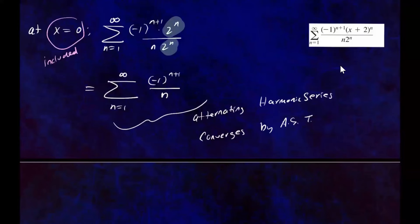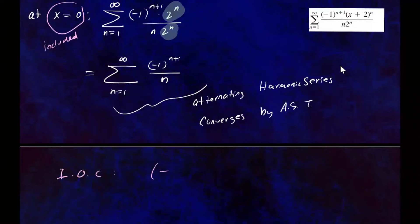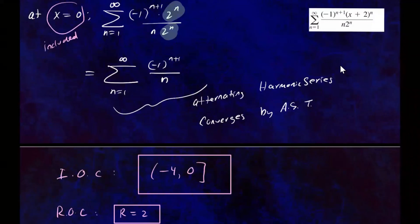So the interval of convergence for this series is negative 4 to 0, where 0 is included but negative 4 is not — written as the half-open interval from negative 4 to 0, closed on the right. And the radius of convergence is R equals 2.